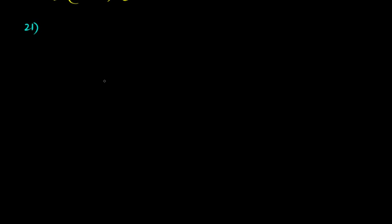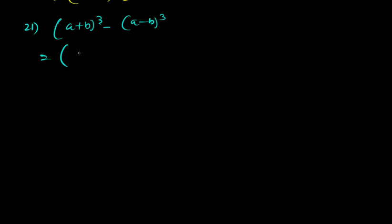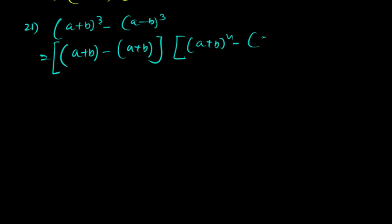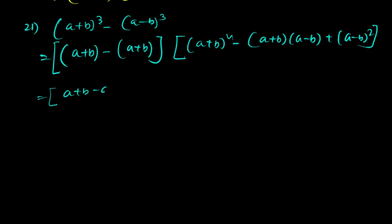Question 21: (a + b)³ – (a – b)³. Let x = (a + b) and y = (a – b), so it's x³ – y³ = (x – y)(x² + xy + y²). Now (x – y) = (a + b) – (a – b) = 2b.